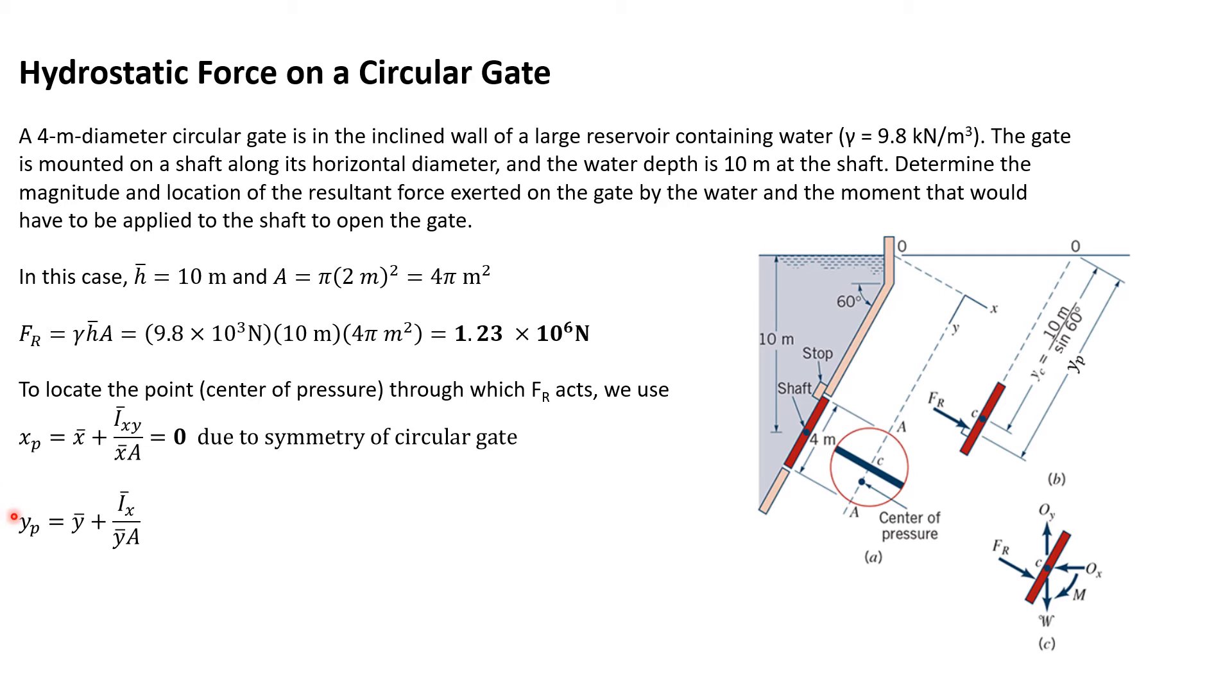Now y_p is not going to be zero. We have to calculate this. We know what ȳ is, and we can calculate I_x. We know ȳ and the area, so we can find this.